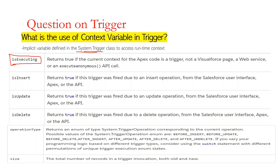If I want to execute some piece of code only during the insert event, I can check the trigger context using Trigger.isInsert. If Trigger.isInsert equals true, then execute my piece of code. Simply we can write in an if block: if Trigger.isInsert then write my piece of code.